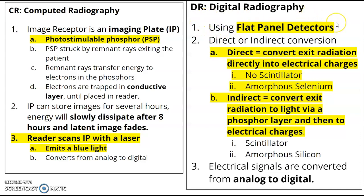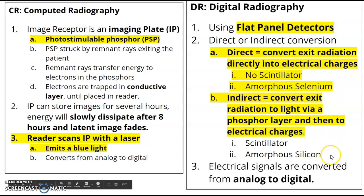Your DR is your flat panel detector. There's going to be direct versus indirect — one uses a scintillator, one doesn't. Your direct uses no scintillator; it goes directly to its conversion. And your electric signals are converted from analog to digital — that's the ADC conversion.